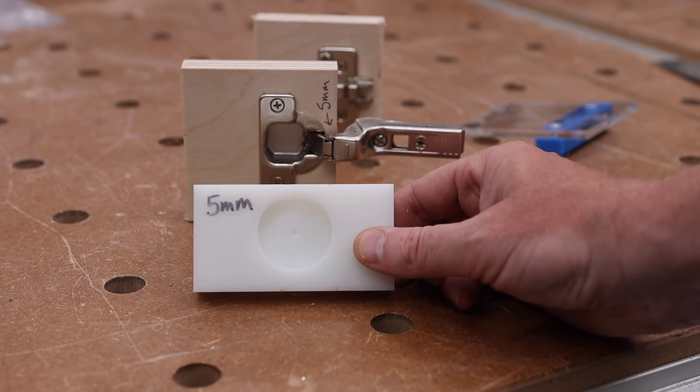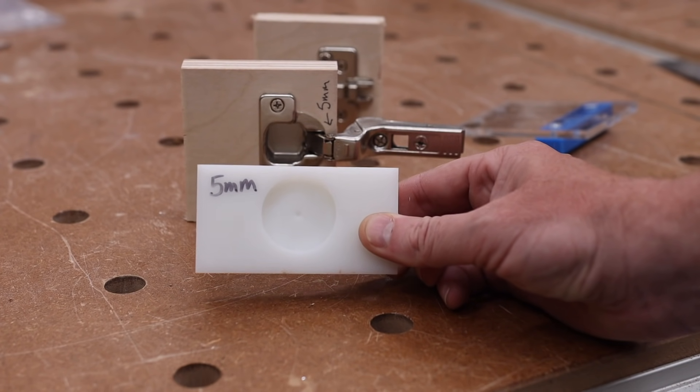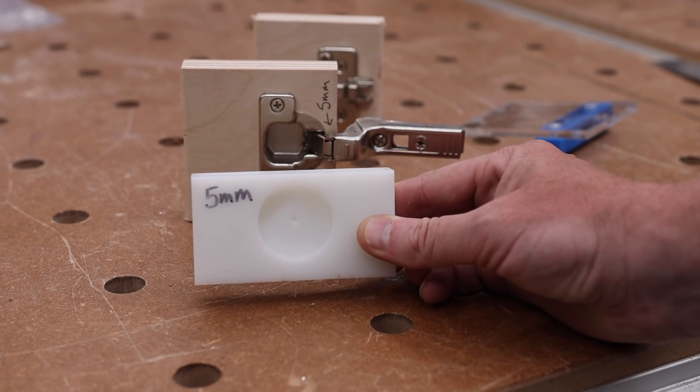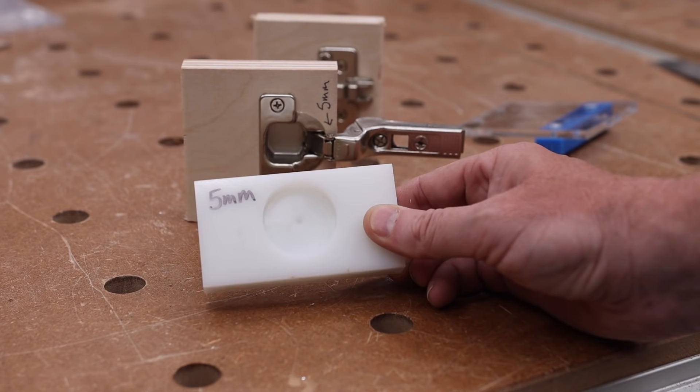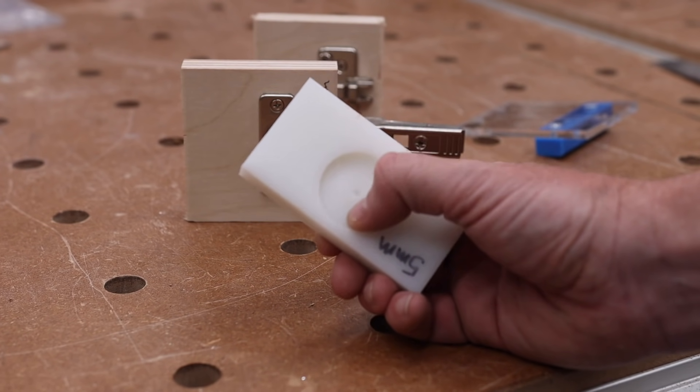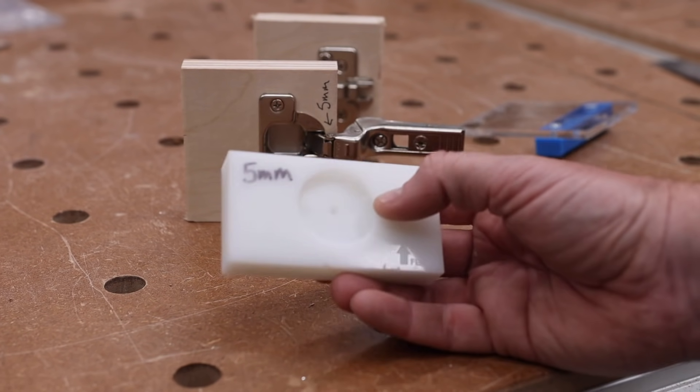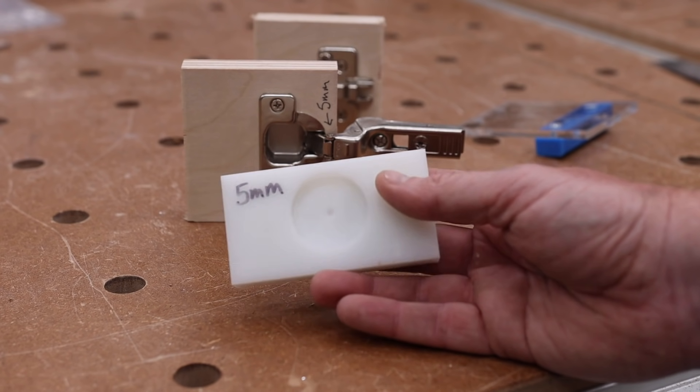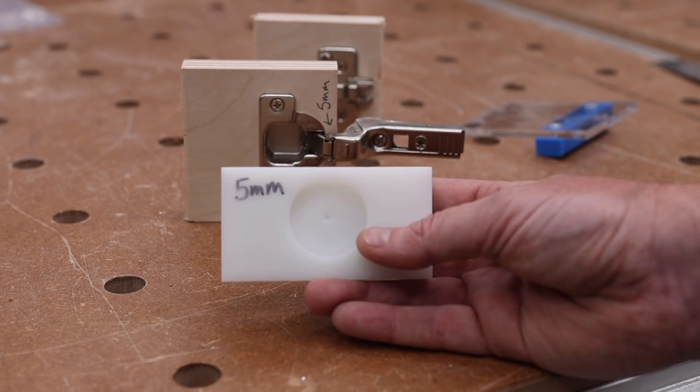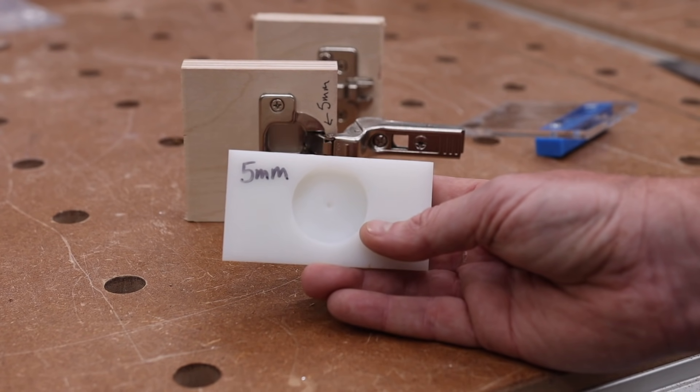Now that's very important because if you don't do the proper tab or setback, your door is not going to fit properly. So how can we go about ensuring that we are accurate all the time? That's where something like this comes in very handy. This is basically just a setup block. And this is mine that I use for five millimeter. You can make these out of anything. This is just some hard plastic. You can make these out of plywood, you can make them out of whatever you want.